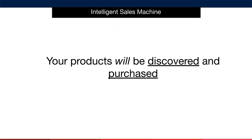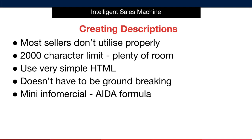Product descriptions will help you sell more — there's no doubt about it. Once you start selling more of your products, you'll find that you'll be discovered more easily, which of course leads to more sales. Most sellers don't use product descriptions properly; some don't use them at all — even Amazon are guilty of this. You have a 2,000 character limit, which gives you plenty of room to write really compelling product descriptions.